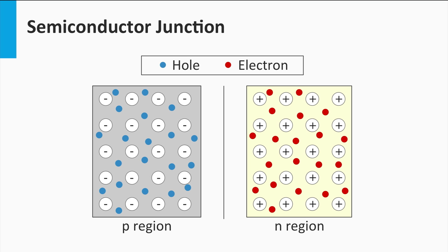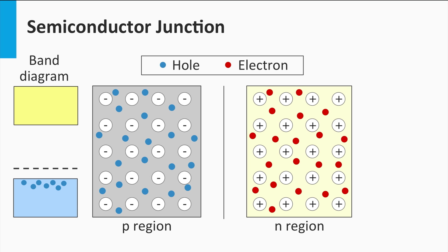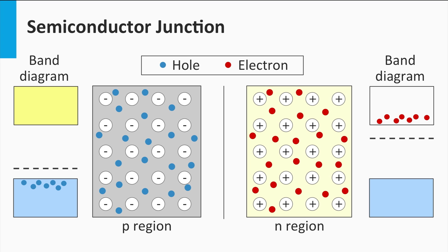On the left we see a p-type semiconductor material. The electronic band diagram of the p-layer is illustrated on the left as well. I would like to address again that for the p-type silicon the Fermi level, indicated by the dashed black line, is closer to the valence band than to the conduction band. On the right we see the n-type semiconductor material. Its corresponding electronic band diagram is illustrated on the right. The Fermi level is closer to the conduction band for the n-type material.